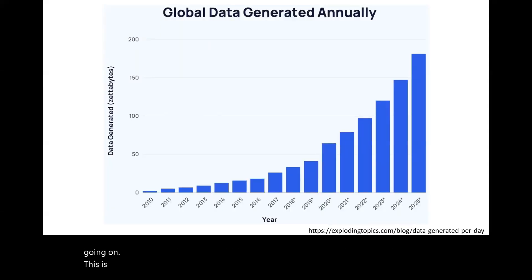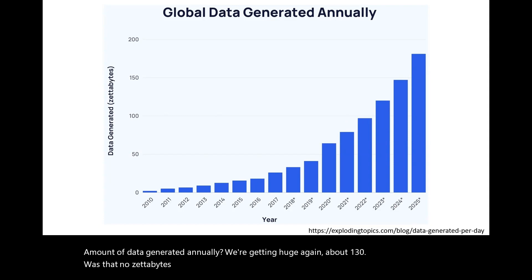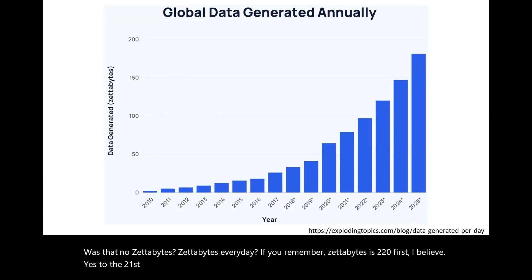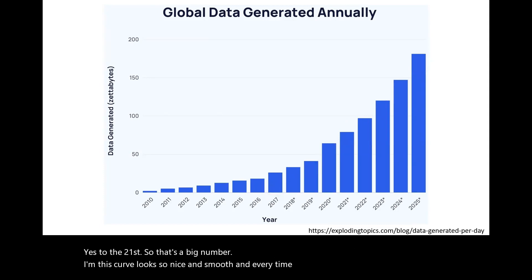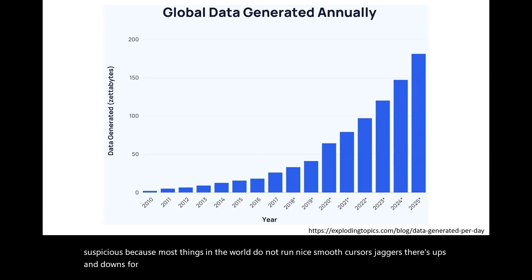This chart from Exploding Topics shows an exponential increase in the amount of data generated annually — we're getting up to around 130 zettabytes. A zettabyte is 2 to the 21st power. The curve looks very smooth, which makes me suspicious, because most things in the world don't run nice smooth curves, but I think the overall trend of increase is probably accurate.